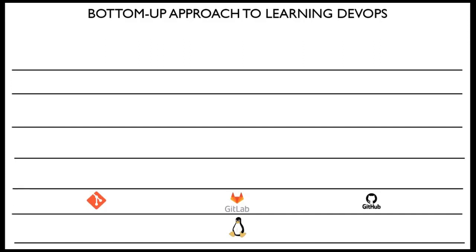Once you're solid with Linux, move up and learn Git. Git — source code management — is where you store your application code, share it with your team, and collaborate. Once you can do code commits and all of that confidently, you can move on to the next tool.